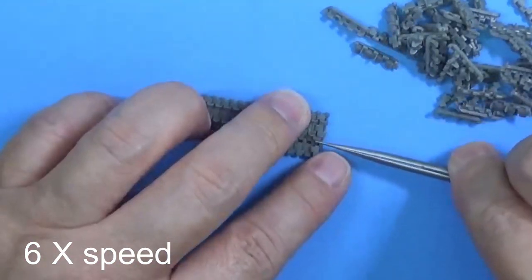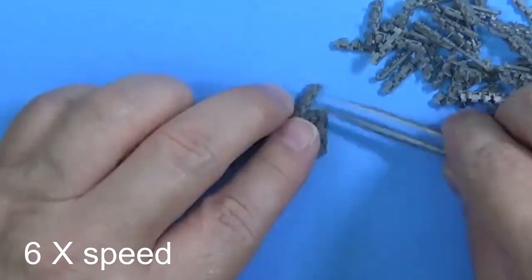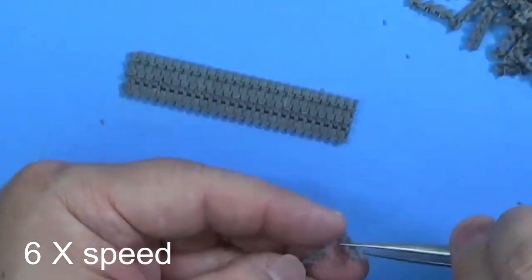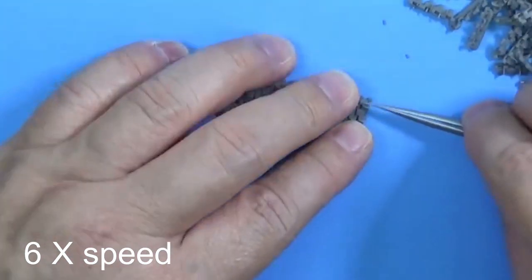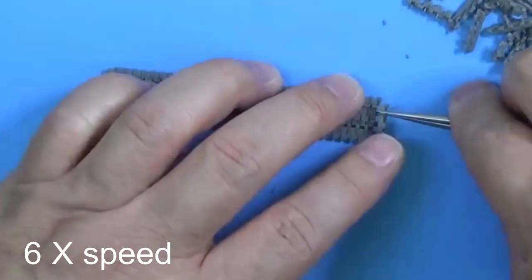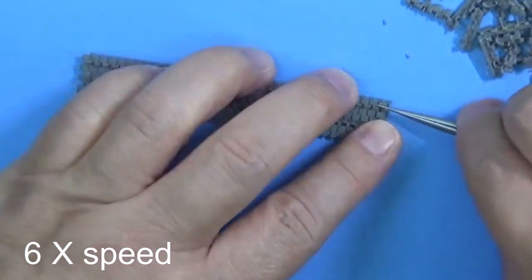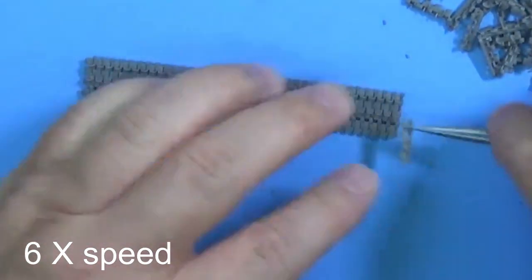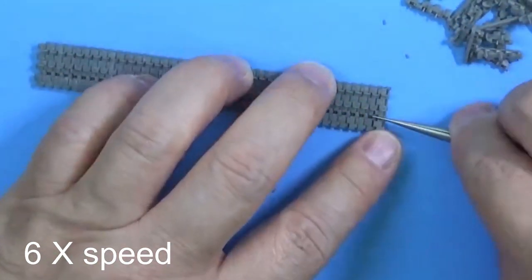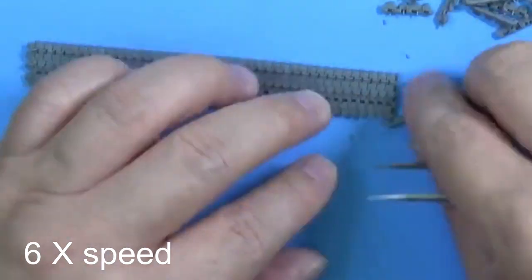And here you can see I speed up the assembly of the track immensely with the new method. Once again, if you find this too repetitive, you can skip this video to 7 minutes and 48 seconds where I finish the full length of this track. Here you can see the assembling of this set of track links is really simple and easy and quite fast.